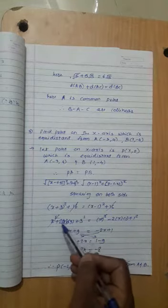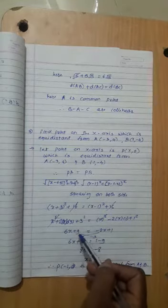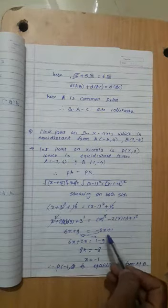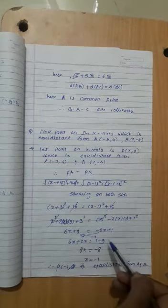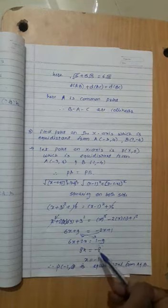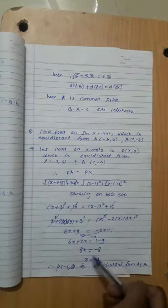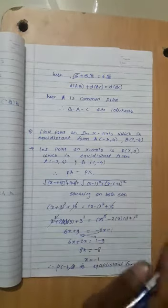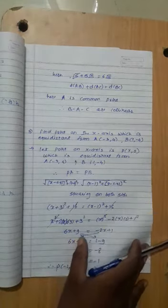x squared plus 2(x)(3) plus 9 equals x squared minus 2x plus 1. Cancel x squared. 6x plus 9 equals -2x plus 1. 8x equals -8, so x equals -1. Therefore P is (-1, 0), the equidistant point.